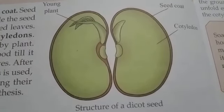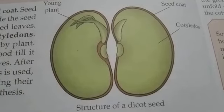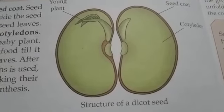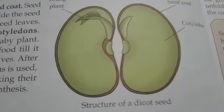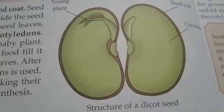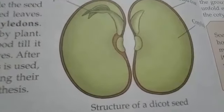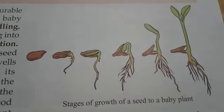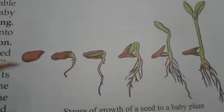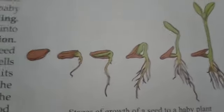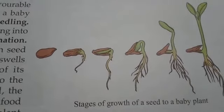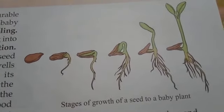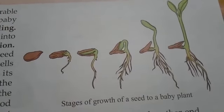Till that time, a baby plant gets its food from cotyledons. After the food from the cotyledons is used, young plants continue making their own food through photosynthesis. Some seeds have only one seed leaf — these are called monocotyledons. Seeds which have two seed leaves are called dicotyledons.